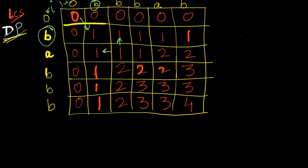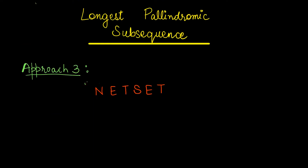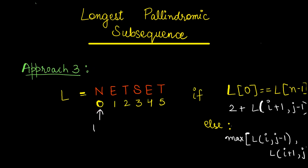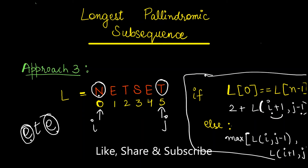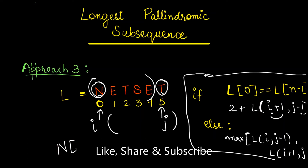Now let's see the better approach for longest palindromic subsequence. I've taken the example 'netset' and indexed it with i from the front and j from the last. If the first character equals the last character, we move i to the second character and j to the second-last. In this case n and t are not matching, so we either avoid the last character or avoid the first character and calculate the max of both.